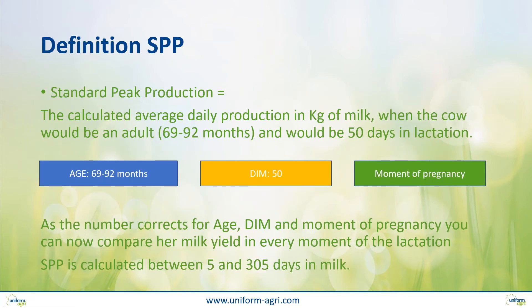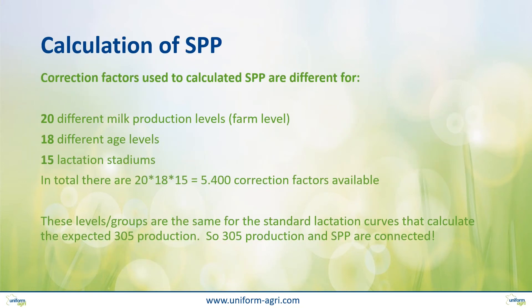What's the core definition of SPP? It's basically the calculated average of daily production when the cow is mature at 50 days in milk. So it corrects for age, days in milk, and moment of pregnancy — that's why you can compare any animals among each other. SPP is always calculated between 5 and 305 days in milk. There are also numerous correction factors used to calculate SPP — there are 5,400 of them — and they adjust based on milk production level, age, or stage of lactation.